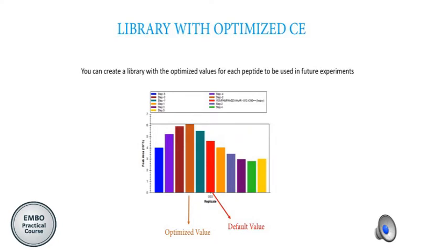This is a new feature in Skyline 2.6: you can also store the information of your optimization values and create a library in order to apply these values for future experiments. This is also something that we will see this afternoon.